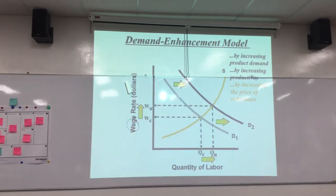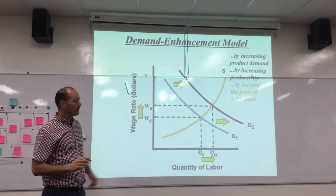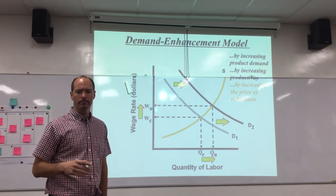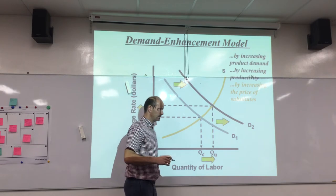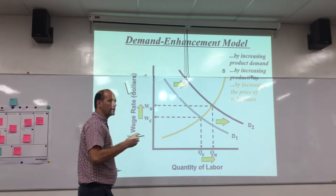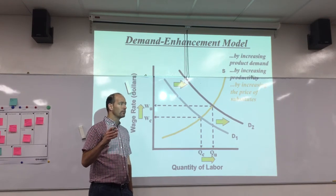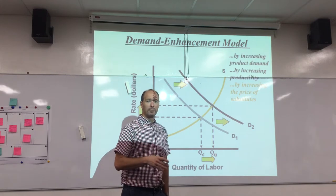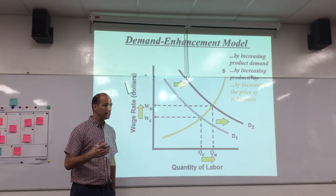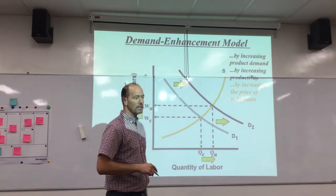The first model is known as the demand enhancement model. An example of this would be the American Automobile Union during the 1980s. In the late 1970s and early 1980s, the American automobile industry began to experience a lot of competition from foreign producers of cars, especially from Japan.